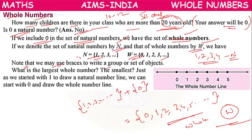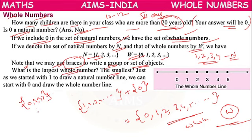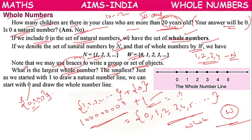Note that we use braces to write a group or set of objects. While representing natural numbers or whole numbers, we make use of flower braces, writing the objects inside them. The smallest whole number is 0 because we start the set from 0. But we cannot tell the largest whole number, because for any big number, if you add 1, that new number would be the greatest — so the largest whole number does not exist.